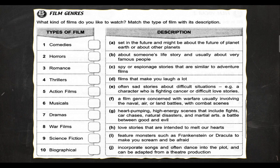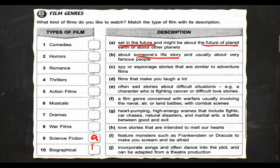Let's take a look at the descriptions. A: the keyword is 'set in the future' — might be about the future of planet Earth or other planets. That is science fiction. B: 'about someone's life story and usually about very famous people' — that is biographical. C: 'about a spy or espionage stories that are similar to adventure films' — spy movies are called thriller movies, about mysteries, spies, detective.